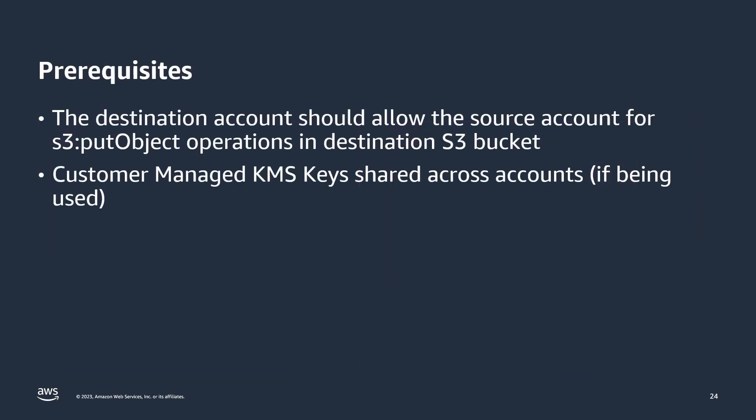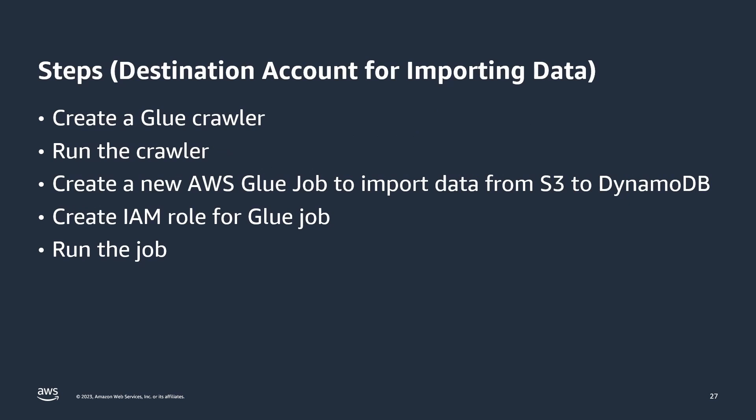Like the second option, as a prerequisite, make sure that the S3 bucket in the destination account allows the source account for S3 put object operations. Once the data is exported to the S3 bucket in the destination account, use an AWS Glue crawler to catalog the exported data. Once the data is cataloged, use AWS Glue jobs to import the data into new or existing DynamoDB tables in the destination account.